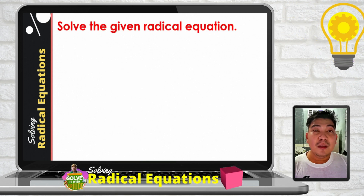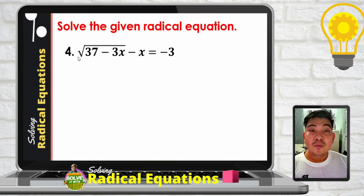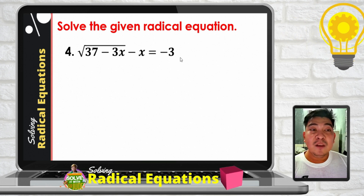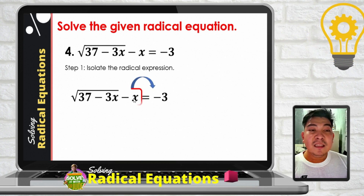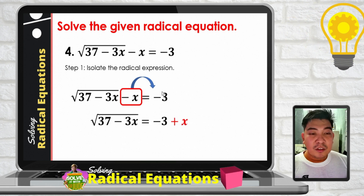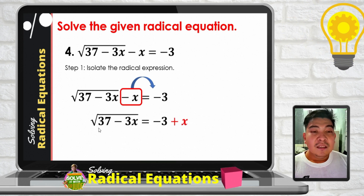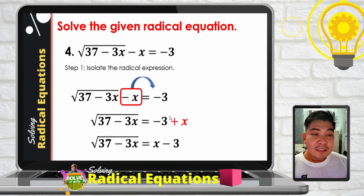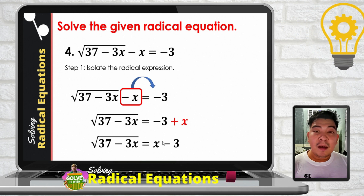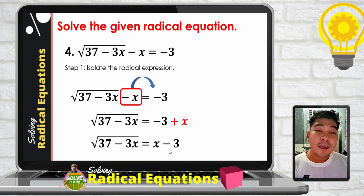Example 4: the square root of the binomial 37 minus 3x, minus x, is equal to negative 3. The first step is to isolate the radical expression by transposing negative x to the right side, giving us: square root of 37 minus 3x equals negative 3 plus x. Rearranging, this becomes x minus 3.